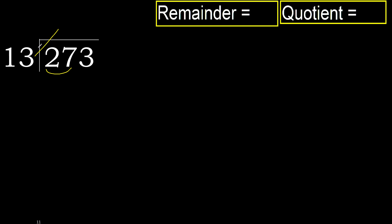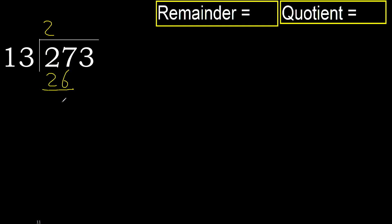But not greater — 13 multiplied by 3 is greater; 13 multiplied by 2 is 26, which is not greater. Ok, subtract. Next.